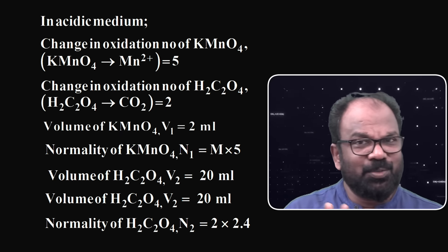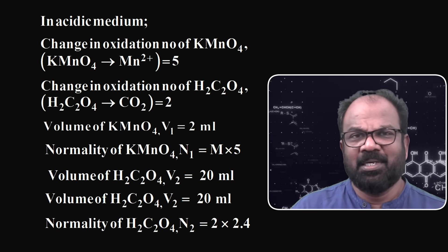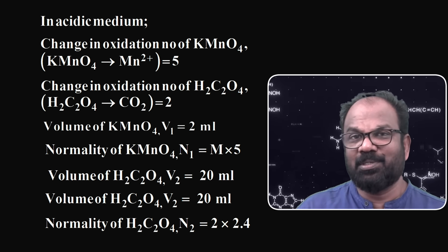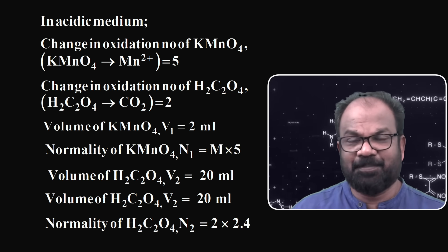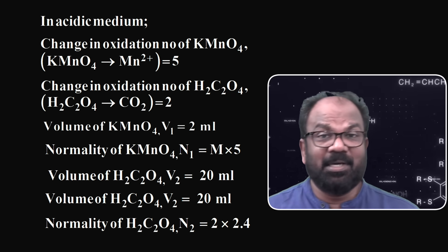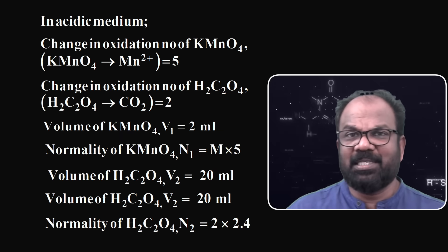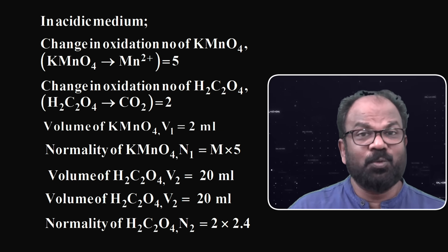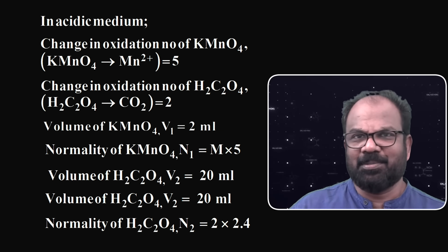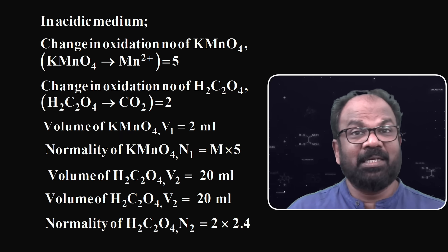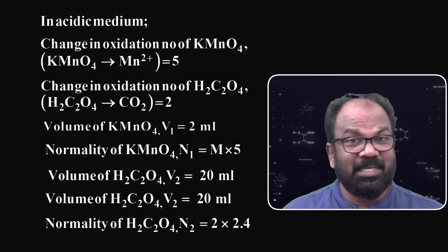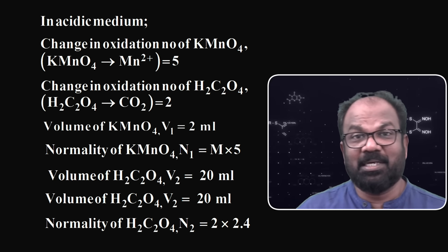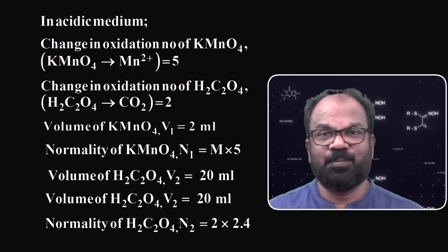Because the oxalic acid molecule contains 2 carbon atoms, the oxidation number of 2 carbon atoms in oxalic acid is equal to +6. In carbon dioxide, the oxidation number of 1 carbon atom is equal to +4, so 2 carbon atoms is equal to +8. Therefore, the change in oxidation number of 1 molecule of oxalic acid in acidic medium is equal to 2.